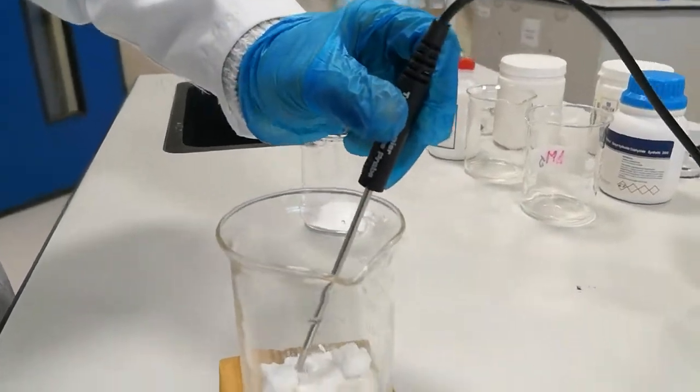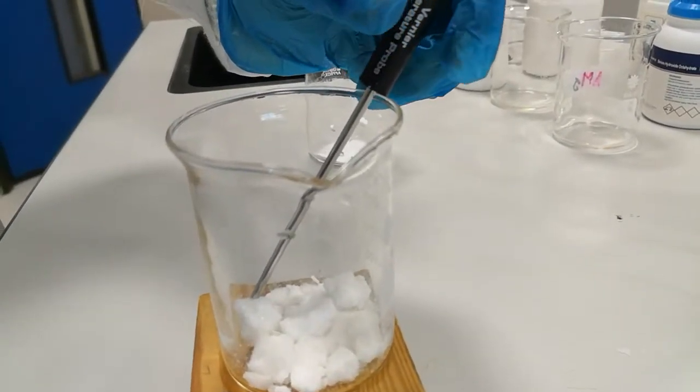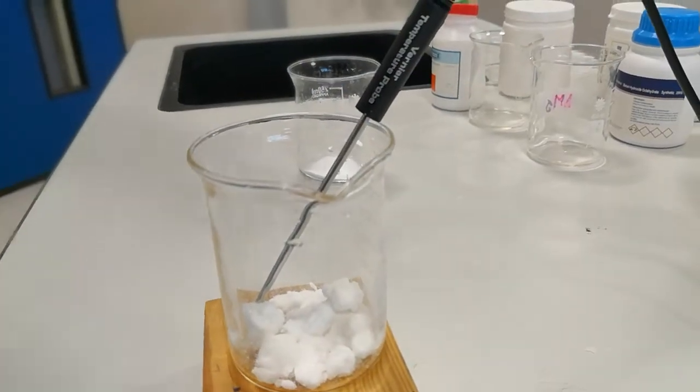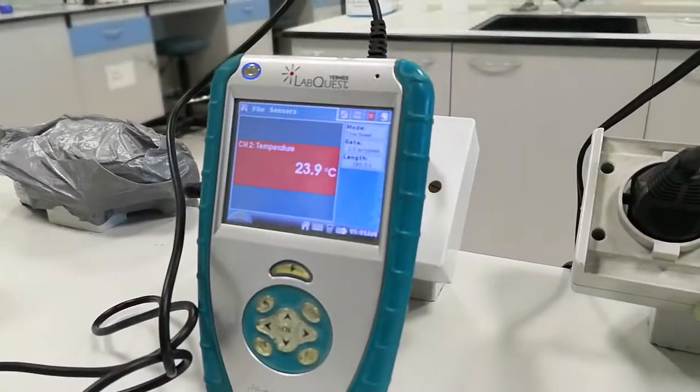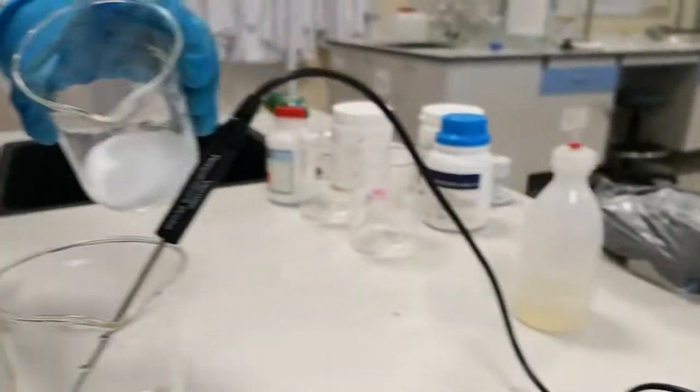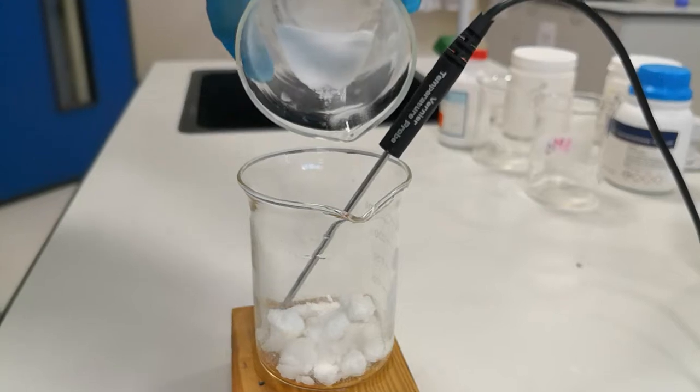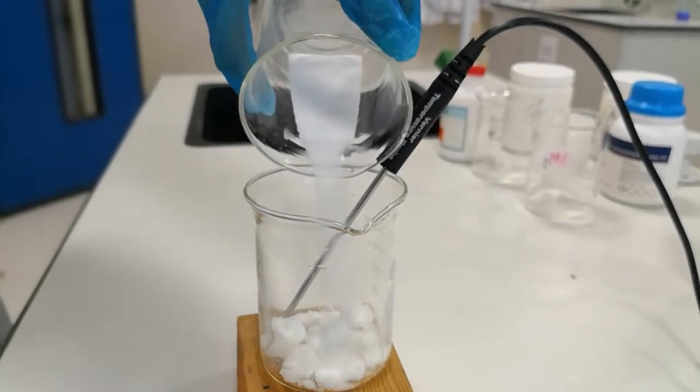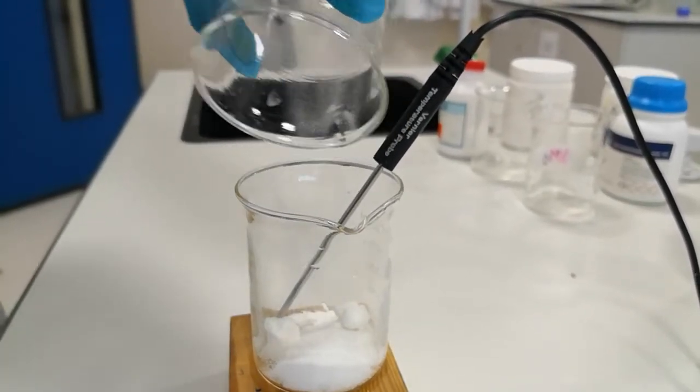I am placing the temperature sensor to record the temperature before the beginning of the chemical reaction. It is now around 24 degrees Celsius. So now I am going to add the ammonium chloride.